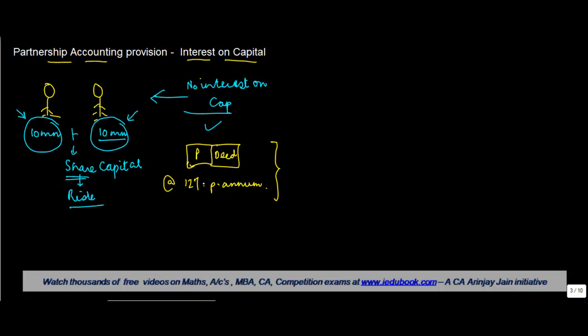Now one important thing you should notice is that this interest on capital is normally on an annualized basis. So let's say these guys put in the money on July 1, 2011, and the accounting year ends March 31, 2012.